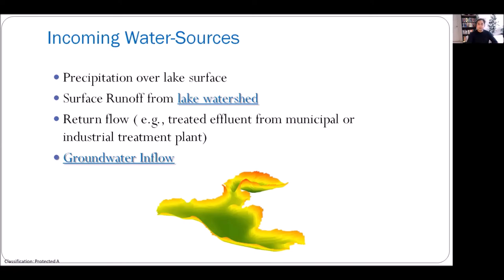There are four different incoming water sources. The first is precipitation falling over the lake surface. The second is surface runoff coming from the lake watershed — every lake has a watershed, a certain area from which runoff flows into the lake. The third is return flow: when someone holds a water license to divert water from a lake, the license often includes an amount of return flow to be diverted back into the water body. The fourth is groundwater inflow into the lake.